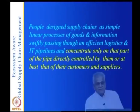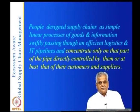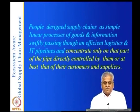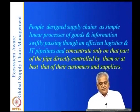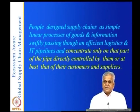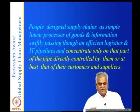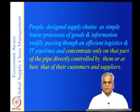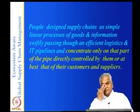We are going to use the ecosystem framework to redesign supply chains. Currently, people design supply chains as simple linear processes of goods and information swiftly passing through an efficient logistics and IT pipeline, concentrating only on the part of the pipe directly controlled by them — at best that of their customers and suppliers. If you are a manufacturer you look at manufacturing; if you are a supplier you look mainly at your own tier. Distributors look at manufacturers and retailers but not at manufacturing effects.